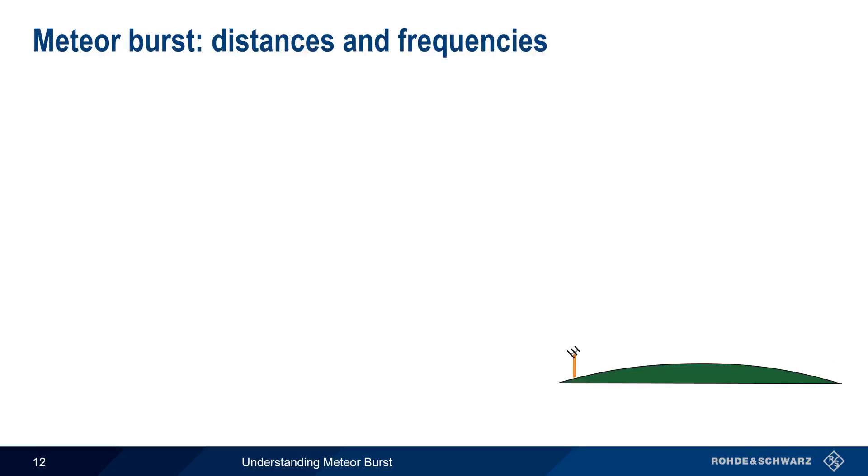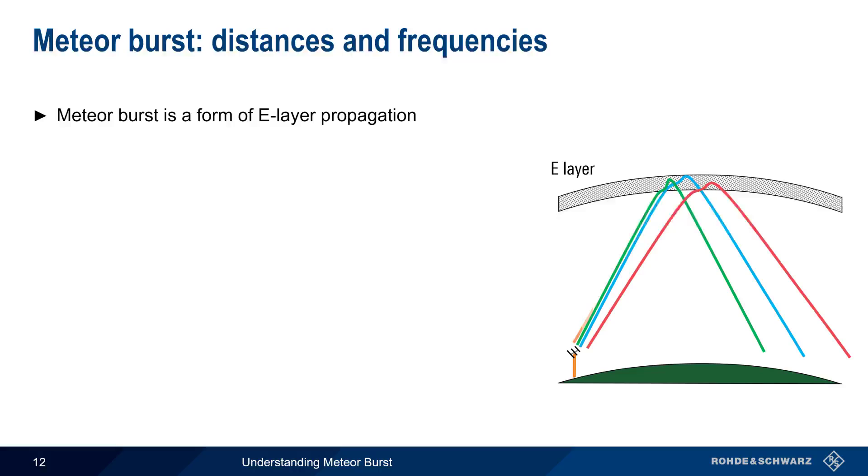The achievable distances and usable frequencies are also important considerations for meteor burst communications. Since meteor burst is a form of ionospheric e-layer propagation, the achievable distances are largely a function of the height of the e-layer. Maximum distances for meteor burst can be up to about 2,000 kilometers, but there is also a minimum distance of about 500 kilometers. This skip zone is similar to that seen in HF skywave communications.